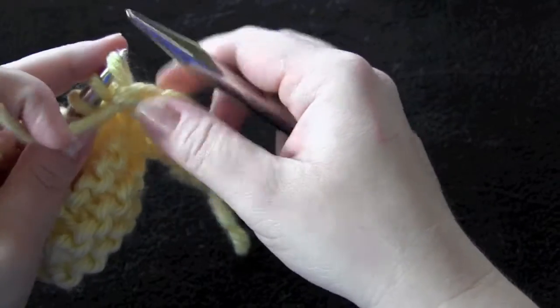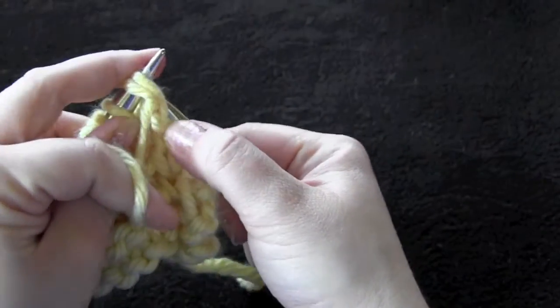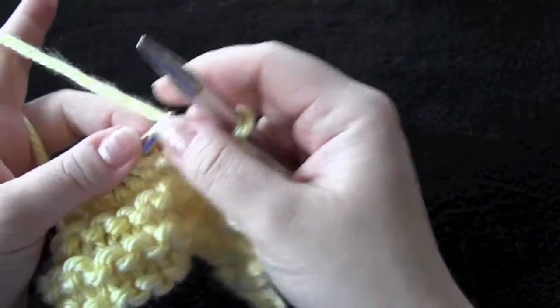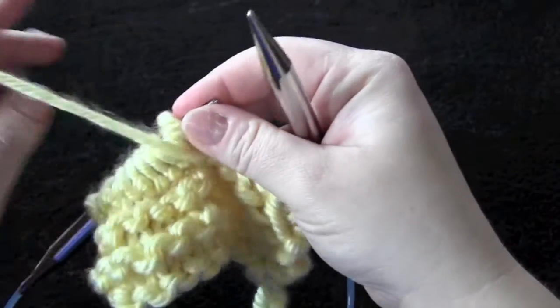So you can use the decrease bind off anywhere that you need a flexible edge, like maybe on toe up socks, or around the neckline of a sweater.